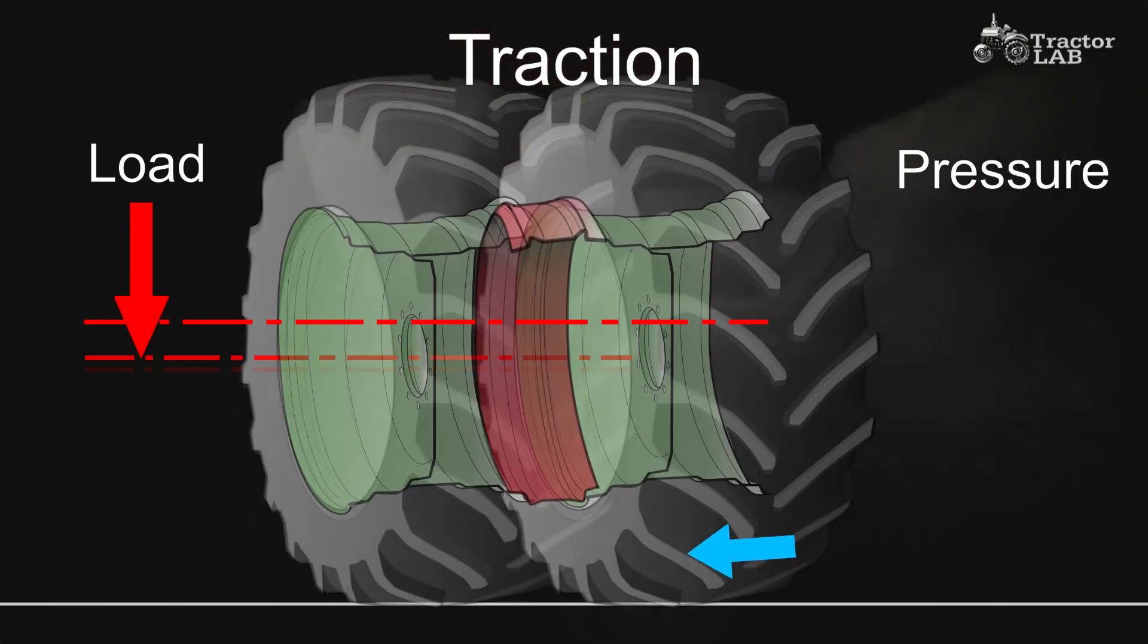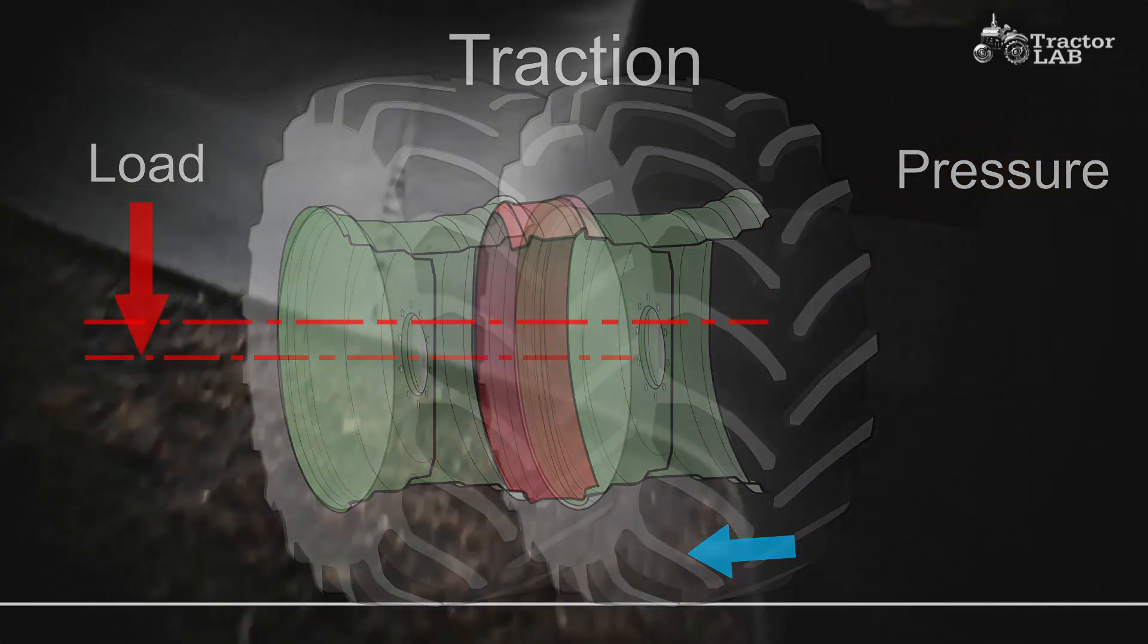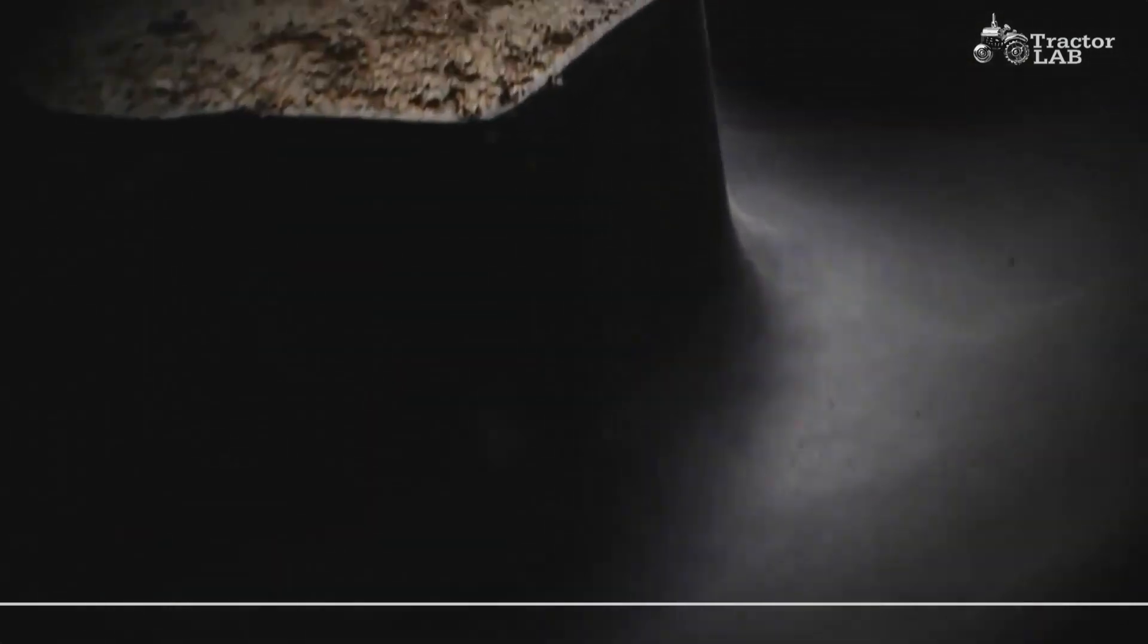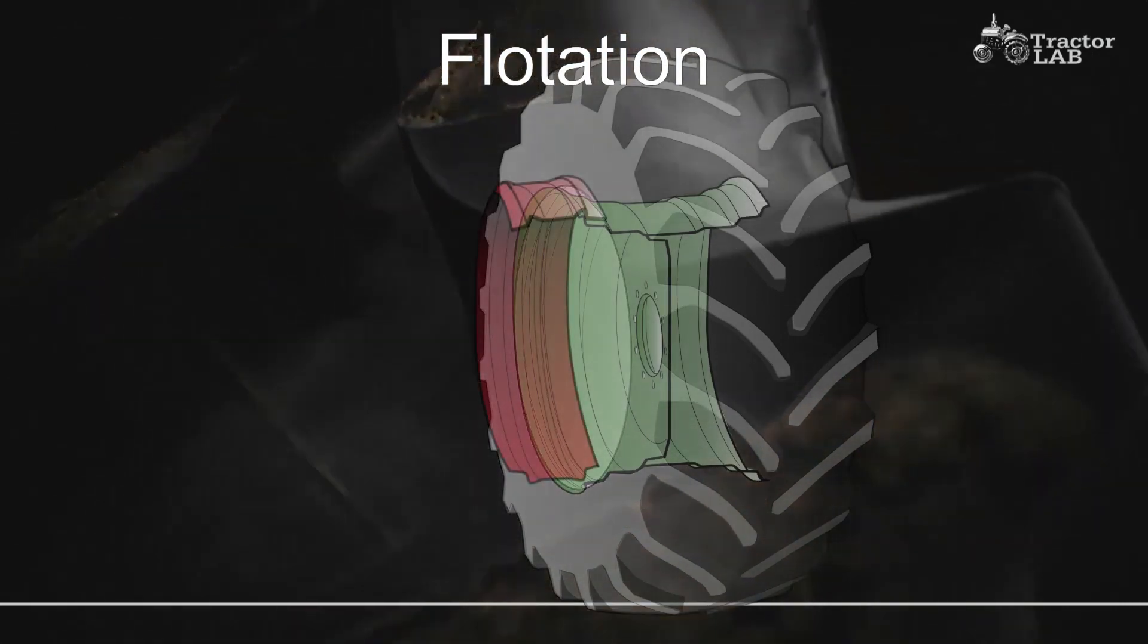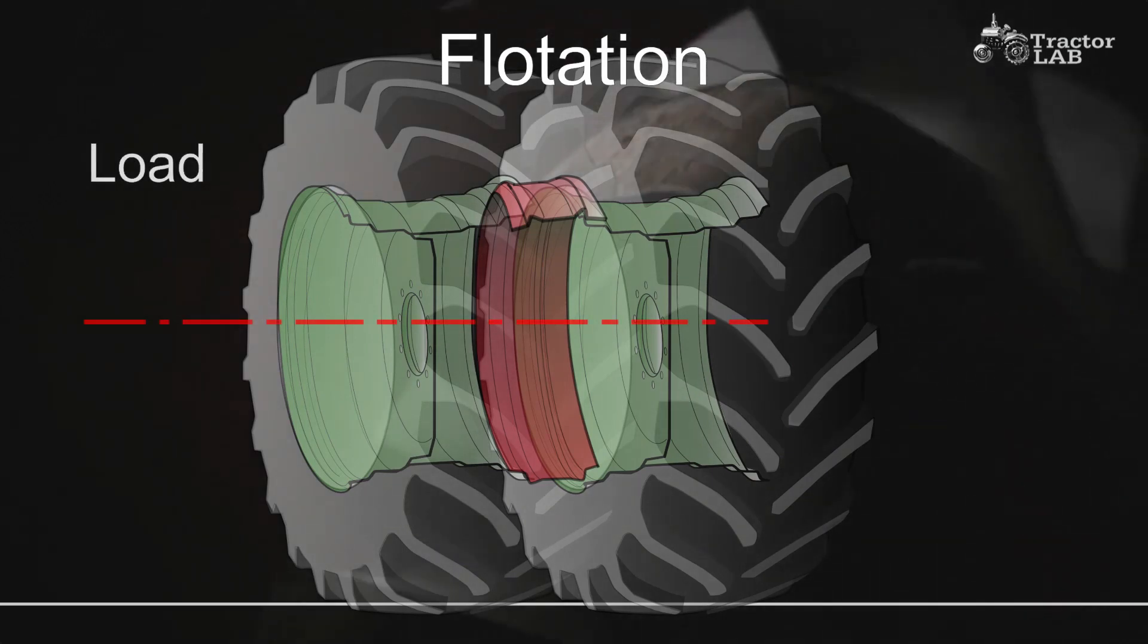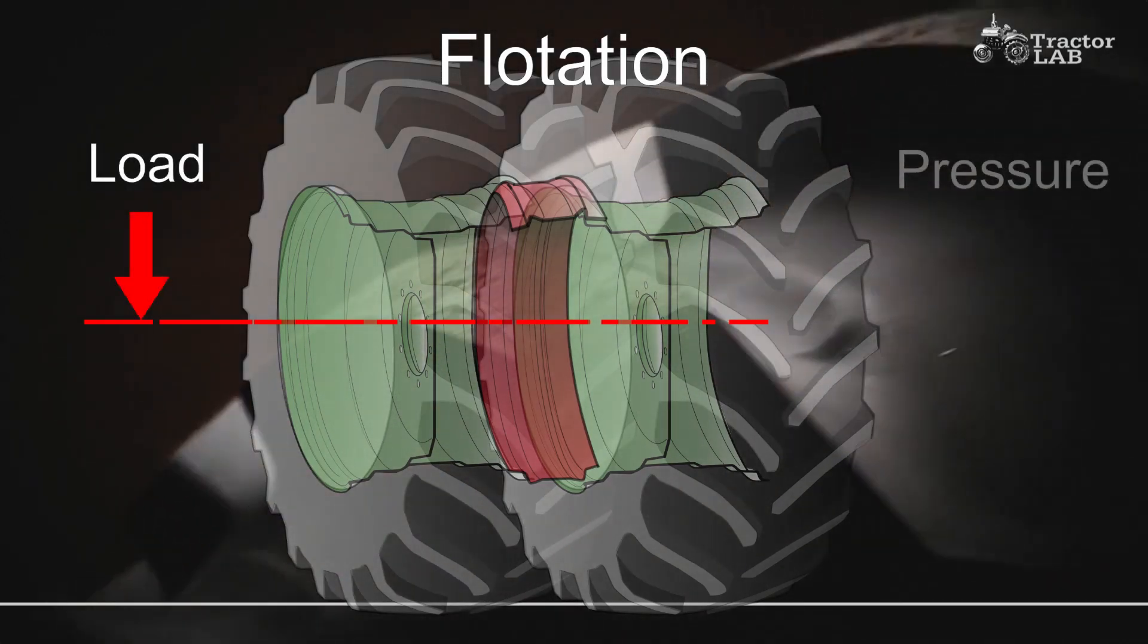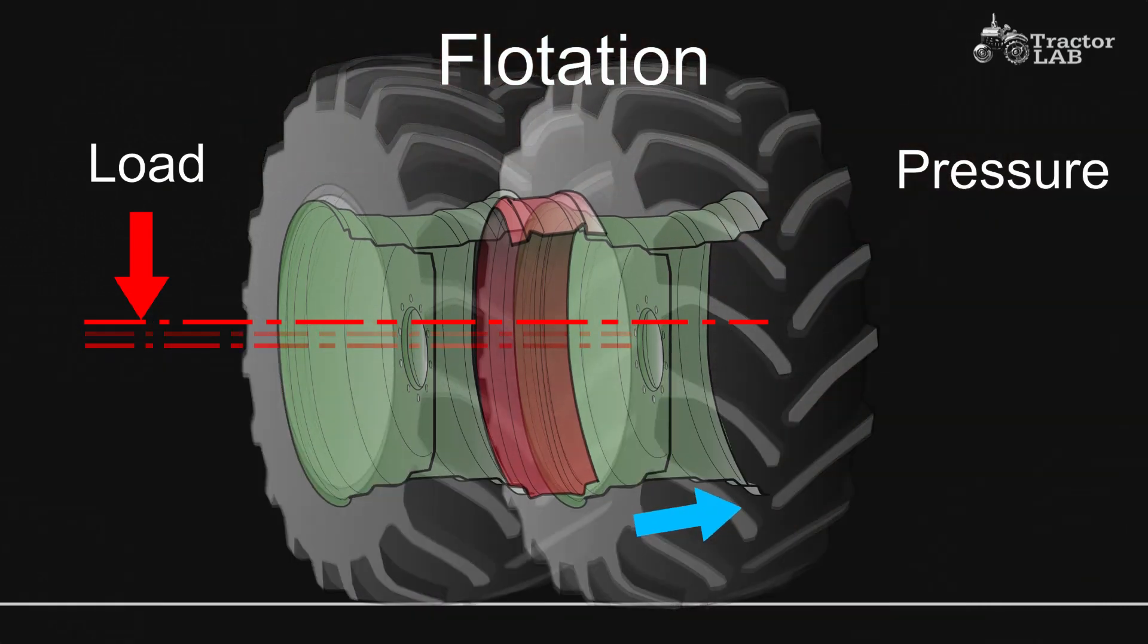If you want flotation from your duals or triples, run your tractor at the manufacturer's minimum weight and HP ballasting recommendations, and decrease inflation pressure to match the lighter load according to the load and inflation tables.